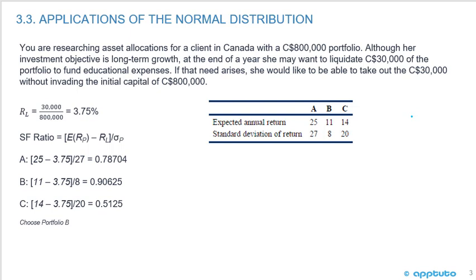Let us work through an example. You are researching asset allocations for a client in Canada with an $800,000 portfolio. Although her investment objective is long-term growth, at the end of the year she may want to liquidate $30,000 CAD of the portfolio to fund educational expenses. If that need arises, she would like to be able to take out the $30,000 without invading the capital of the $800,000. There are three portfolios — A, B, and C — to consider.